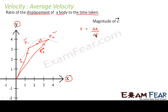So average velocity would be delta r by delta t. By convention, to distinguish average velocity from instantaneous velocity, we denote average velocity with a bar (line) over it. The direction of average velocity is very clearly in the direction of delta r — that means the direction of average velocity would be the same as the direction of the displacement vector.